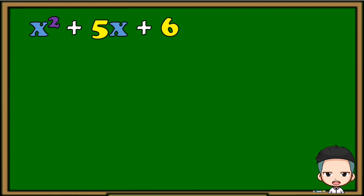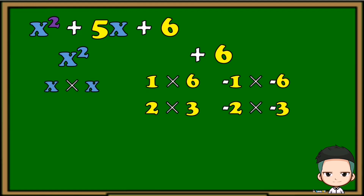Let's try this example: x squared plus 5x plus 6. To make it easy, let's copy the first term and the last term. Make sure to copy the operation before the last term. Next, we need to get all the factors of the first term and the last term. For x squared, that is x times x.